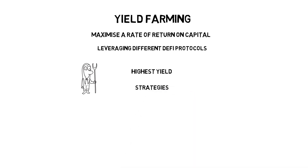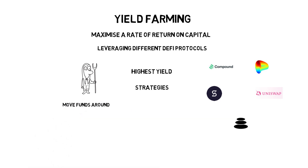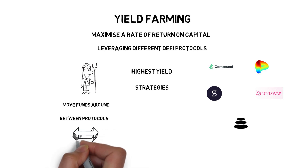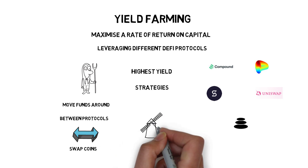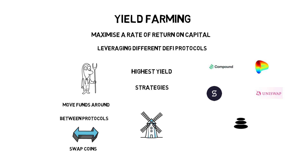Yield farmers try to chase the highest yield by switching between multiple different strategies. The most profitable strategies usually involve at least a few DeFi protocols like Compound, Curve, Synthetix, Uniswap or Balancer. If the strategy doesn't work anymore or if there is a better strategy available, the yield farmers move their funds around — moving between different protocols or swapping coins to others currently generating more yield. In yield farming, this procedure is sometimes called crop rotation.